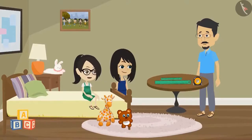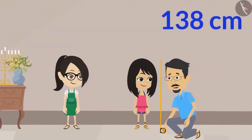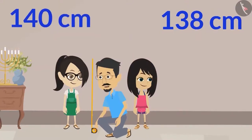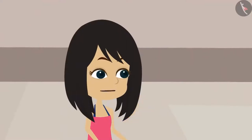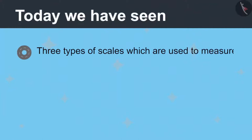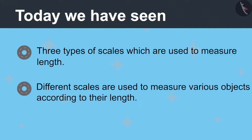Uncle, can you measure our height? Sure. You both stand against the wall. Neha, your height is 138 centimeters. And Vandana, your height is 140 centimeters. This scale is very good — with this we can measure long objects. Can we take this scale? We will measure the length of more objects, Papa. Why not? You can keep this scale with you. Today we have seen three types of scales which are used to measure length, and different scales are used to measure various objects according to their length.